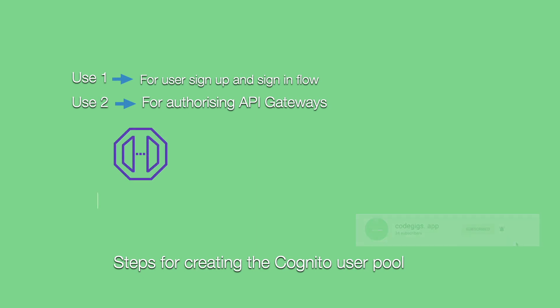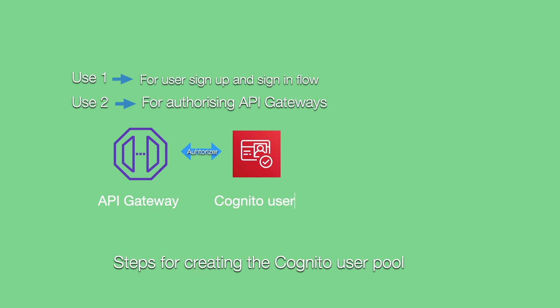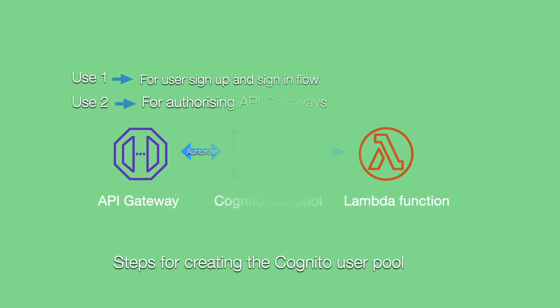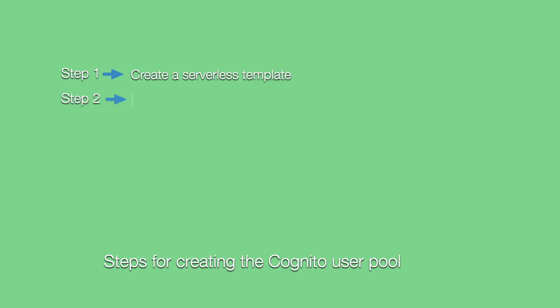Let's discuss how the second use case is going to look. We already have some API Gateways developed, and now we are going to be attaching an authorizer. This authorizer is going to be the Cognito User Pool that we are building here. If the users coming through the API Gateway are authenticated from the Cognito User Pool, they are going to get access to the Lambda function.